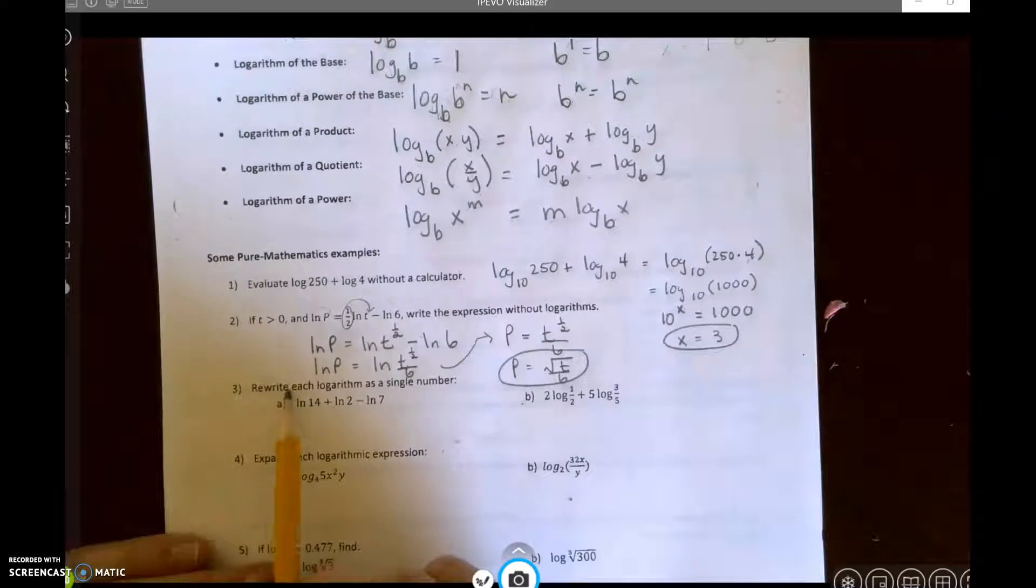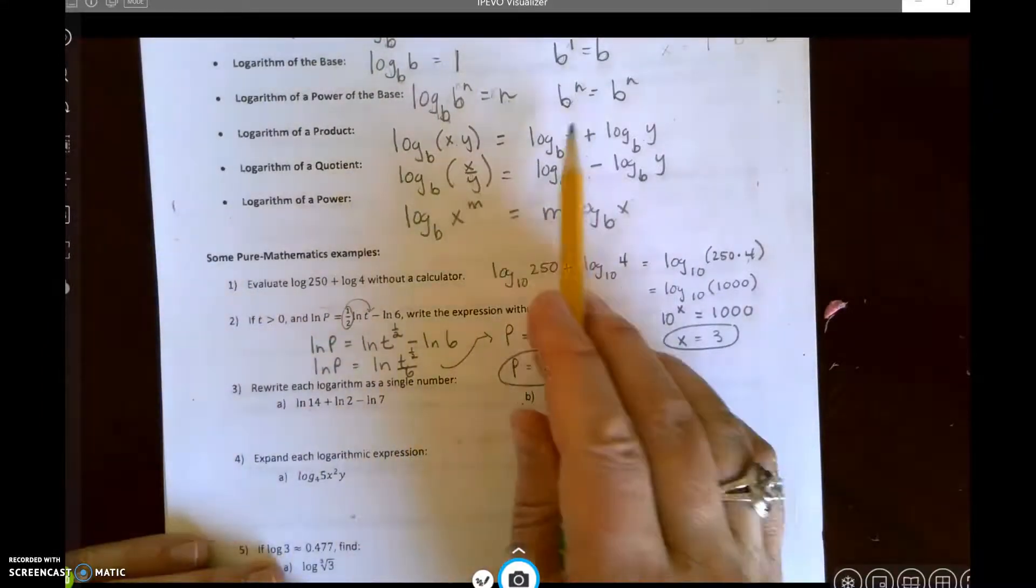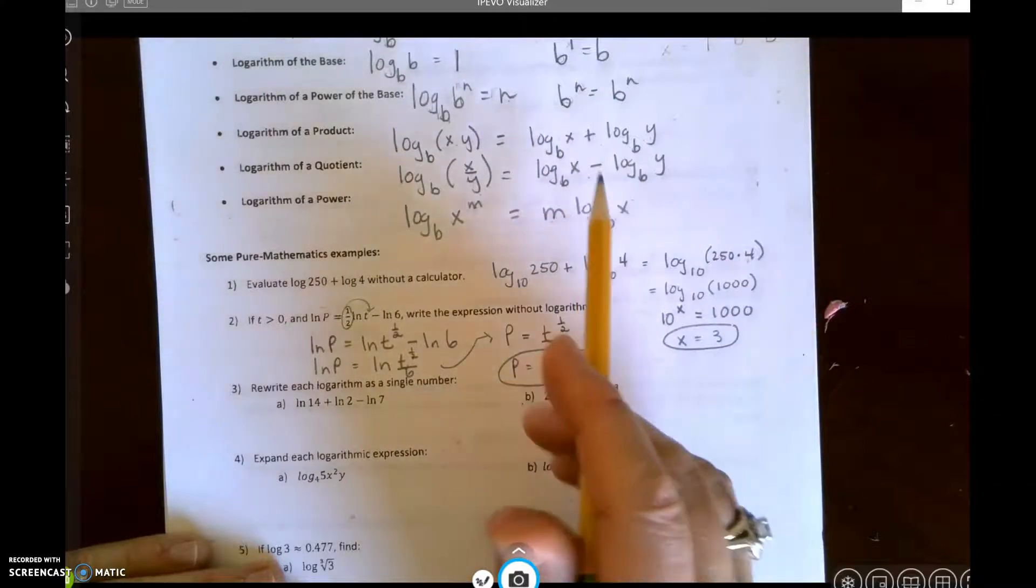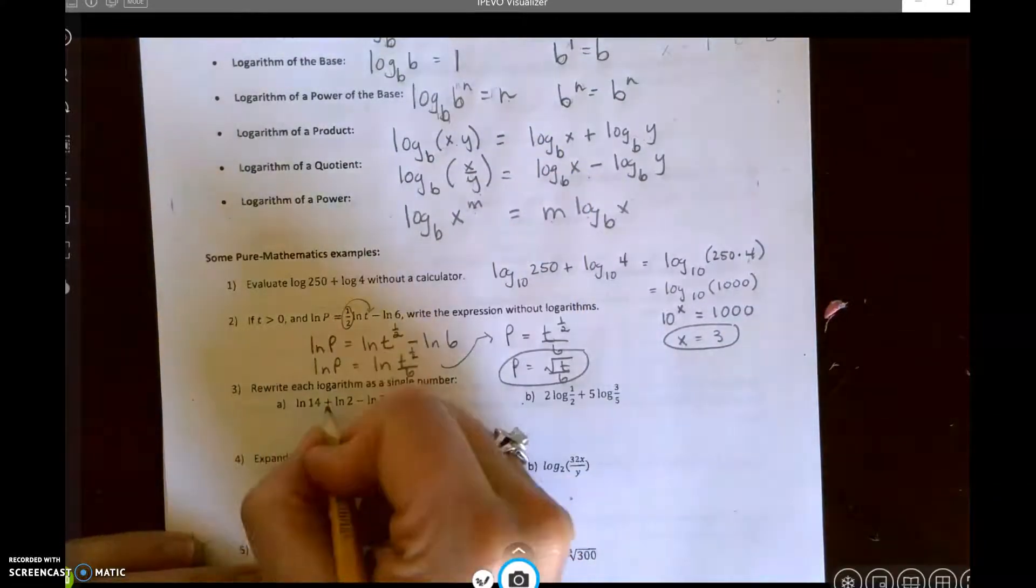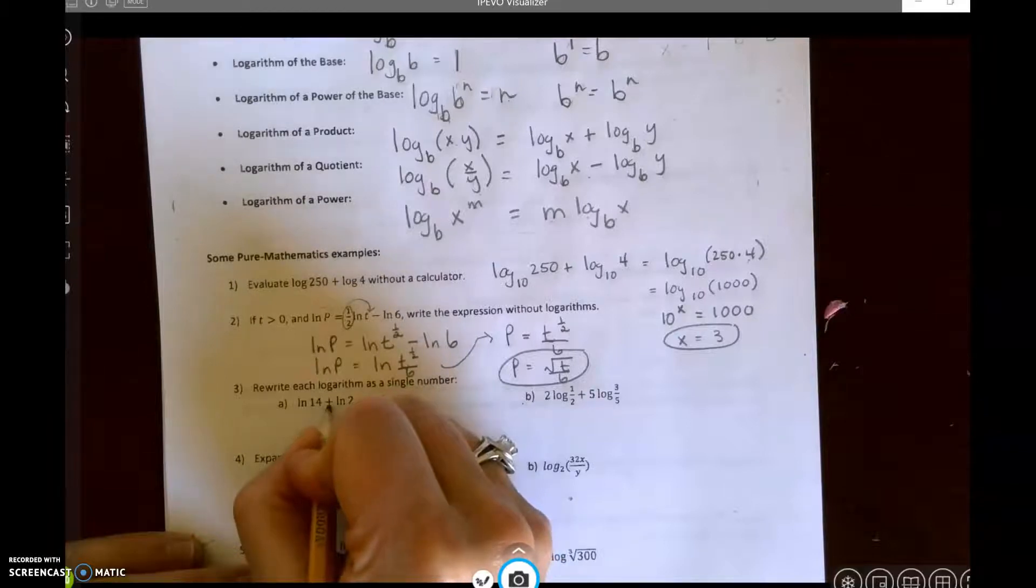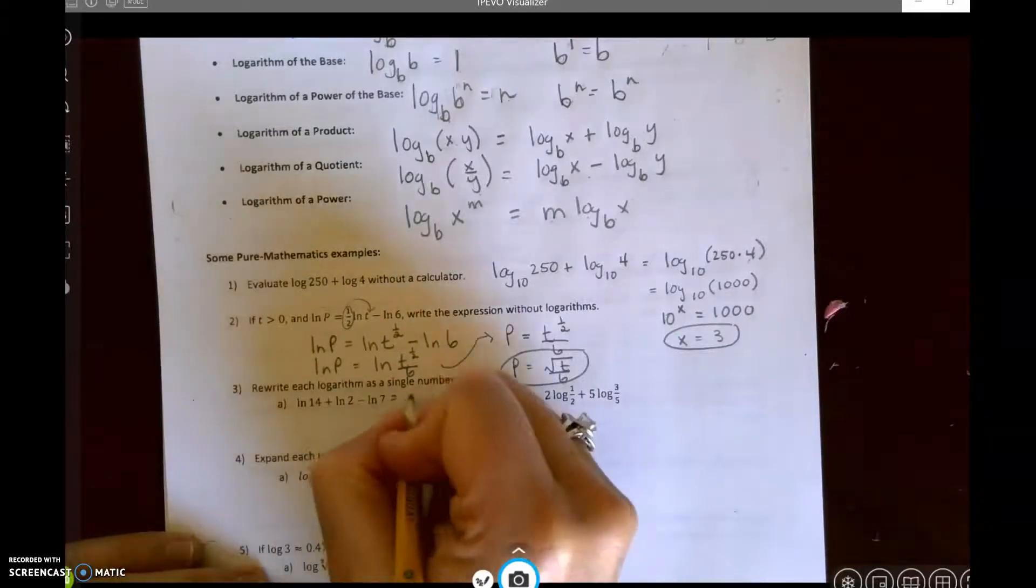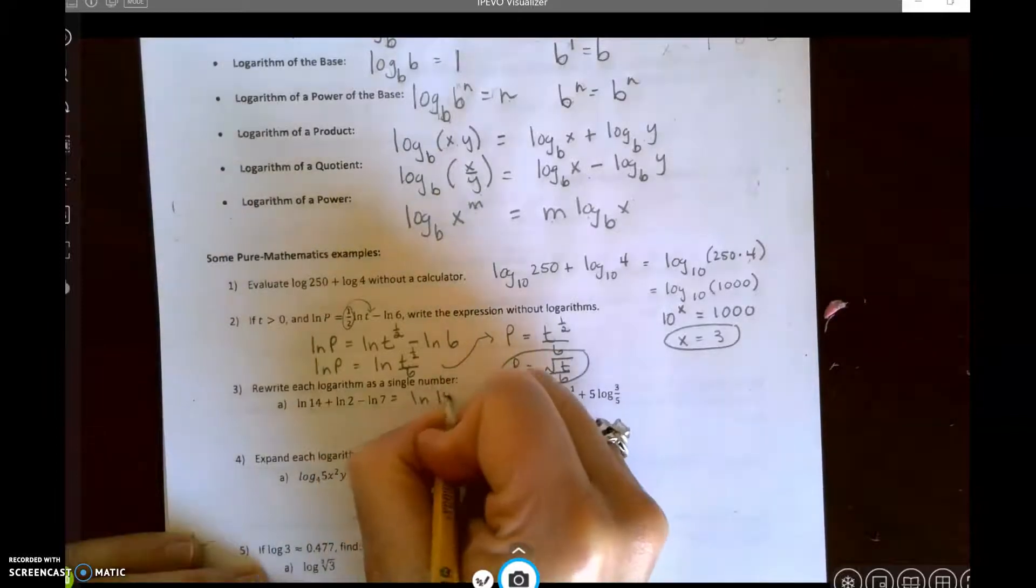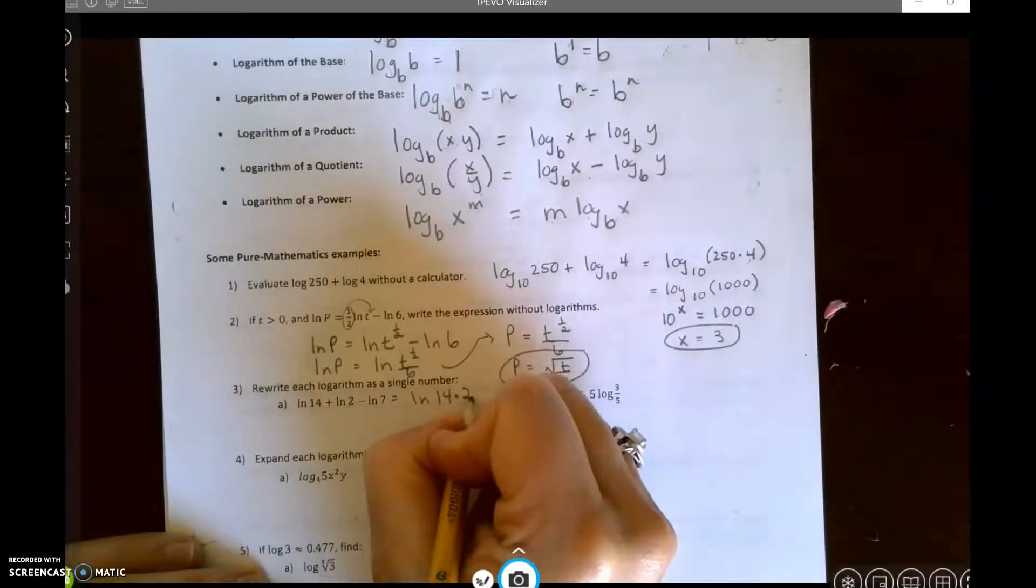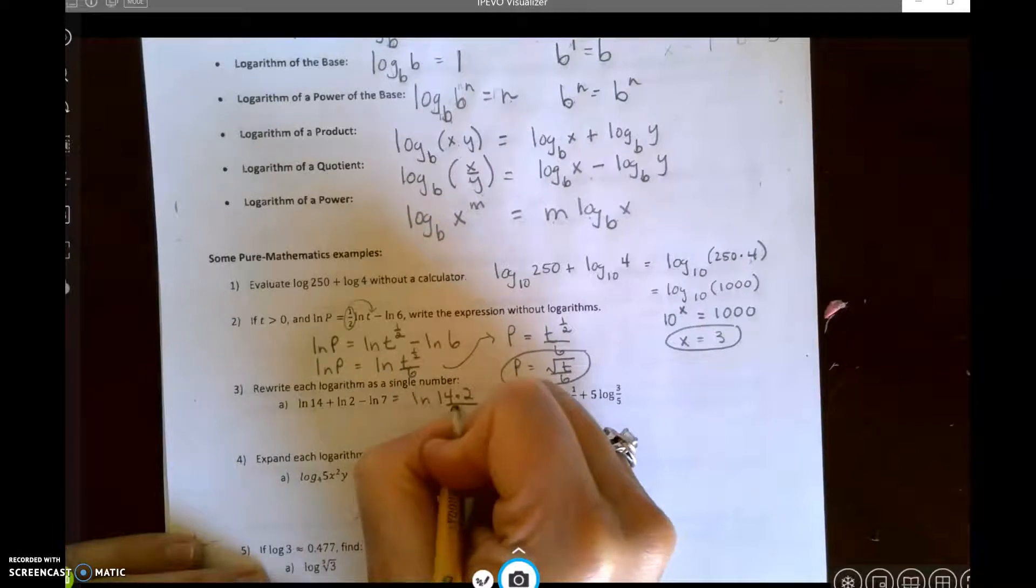All right, let's keep going. Let's do the next one. Write, rewrite each logarithm as a single number. So these are expanded like this, and we are going to condense them. Addition means multiplication, subtraction means division.